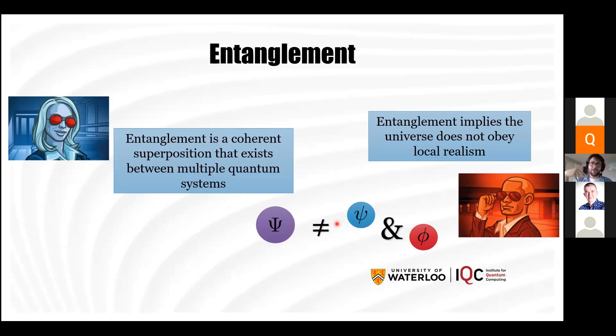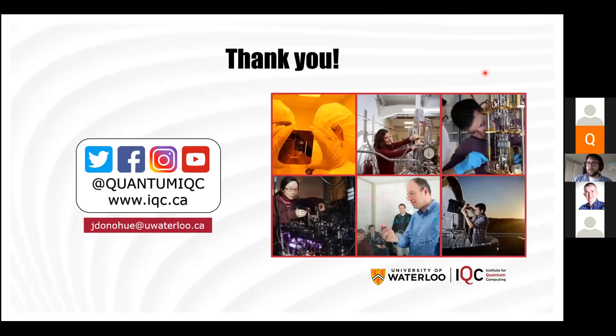Two main takeaways: entanglement is a coherent superposition that exists between multiple quantum systems — it is correlation, but a coherent effect that exists between separate quantum systems. And it implies the universe does not obey local realism; we have to throw out either realism or locality. Thank you so much for joining me this afternoon, and thank you to the community for hosting me. If you have questions, you can reach me by email, follow IQC on social media, or visit our website.